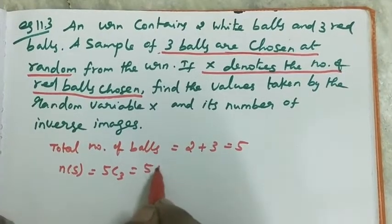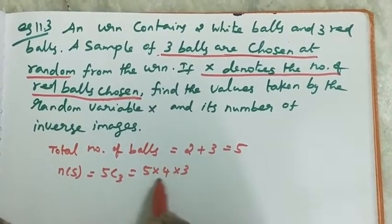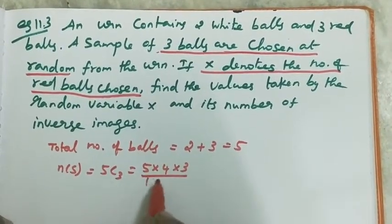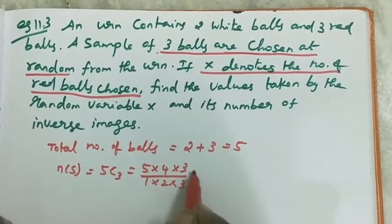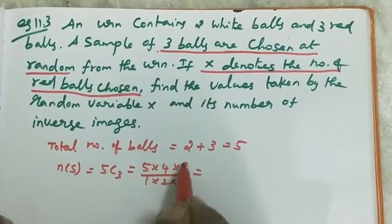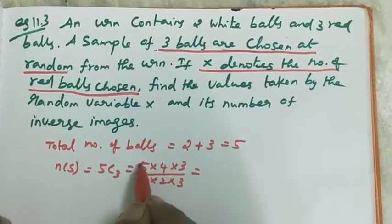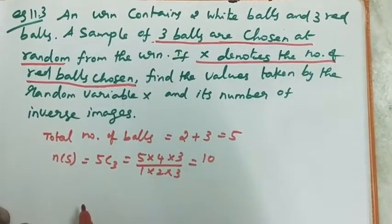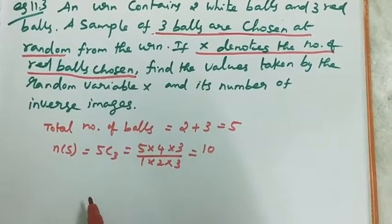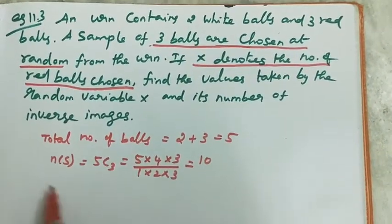5C3 equals 5 into 4 into 3, divided by 1 into 2 into 3. The 3s cancel, and 2 divides into 4, giving 5 times 2 equals 10. So 10 is the total number of elements in the sample space.